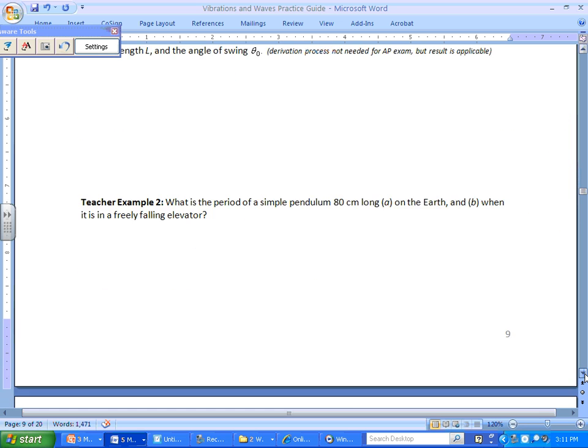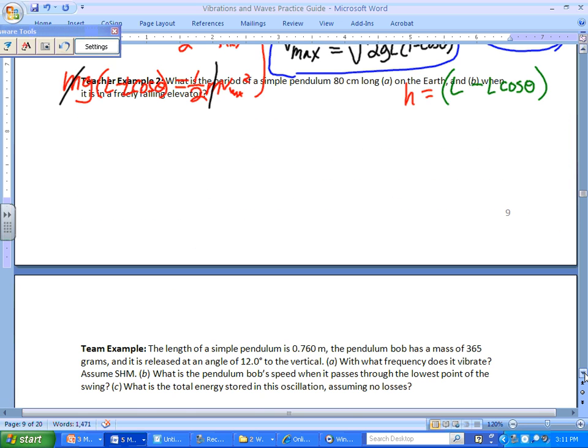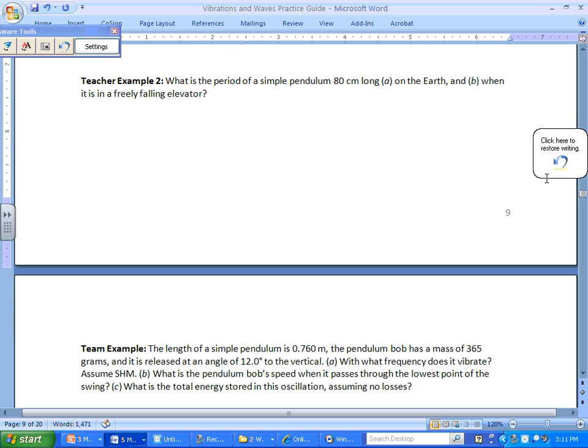So let's look at another example. You're asked, what's the period of a pendulum that's 80 centimeters long? A, on Earth. And B, when it's in a freely falling elevator. I can't wait to do that, that's going to be interesting. First, let's look at A.